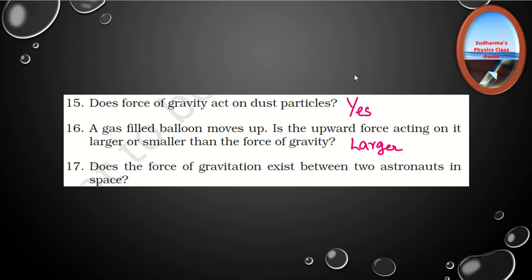Question 17: Does the force of gravitation exist between two astronauts in space? Definitely yes. Gravitational force is a universal force — any object in the universe attracts any other object with a force. Any objects that have mass and are separated by a distance will have a gravitational force existing between them. So there will definitely be a gravitational force between two astronauts in space.